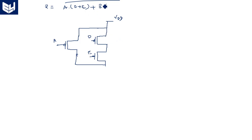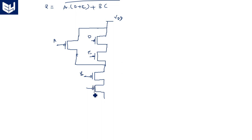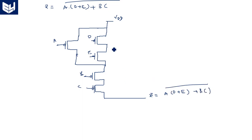Now, B and C transistors are in parallel, and this parallel set must be in series with the total A·(D+E) set. So B and C are placed accordingly. The PMOS network is now complete — it consists of five transistors connected between VDD and the output, representing Z = A(D + E + BC)̄.